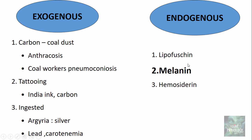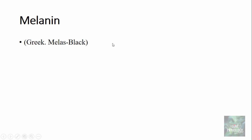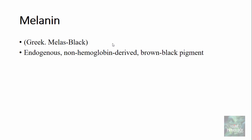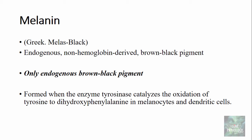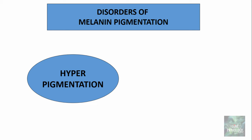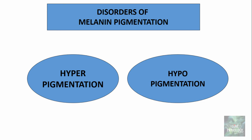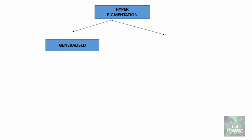Moving on to melanin. The word melas is a Greek word meaning black. Melanin is an endogenous non-hemoglobin-derived brown-black pigment — the only endogenous brown-black pigment derived from tyrosine. It is formed when the enzyme tyrosinase catalyzes the oxidation of tyrosine to dihydroxyphenylalanine, occurring in melanocytes and dendritic cells. Disorders of melanin pigmentation include hyperpigmentation or hypopigmentation.